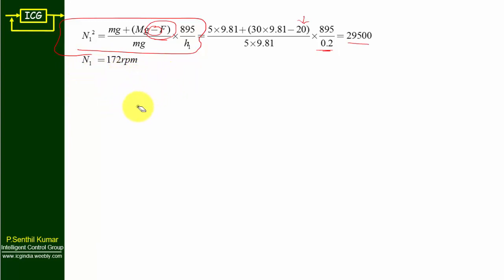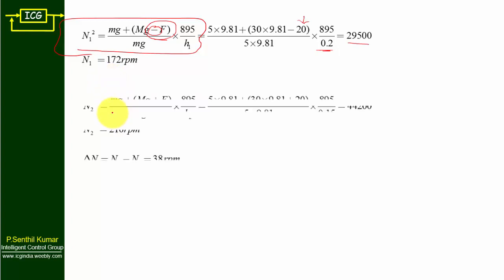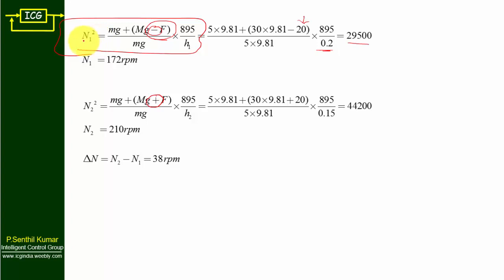There is no need to draw a new free body diagram for n2f. For maximum speed, use the same formula but with a plus sign for friction (adding the force term gives a higher speed value), and apply h2 instead of h1: n2f² = [(5×9.81 + 30×9.81 + 20) / (5×9.81)] × (895 / 0.15). This gives 44,200, so n2f = √44200 = 210 rpm.